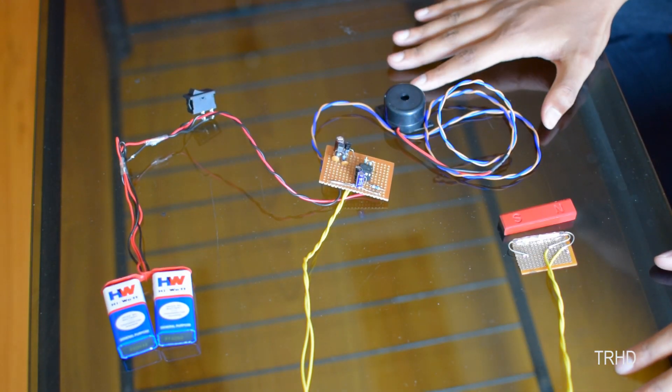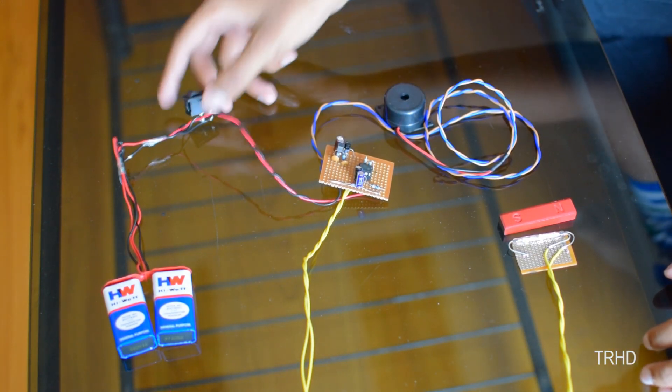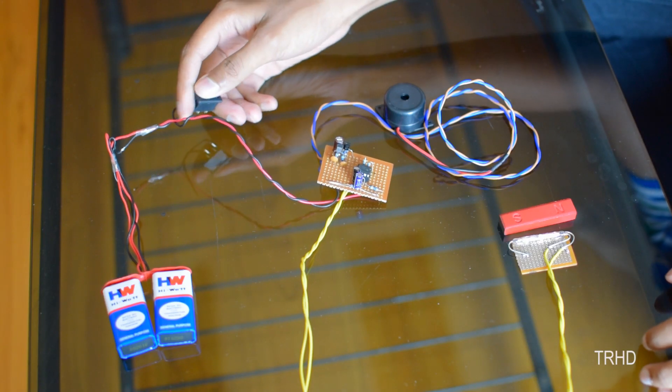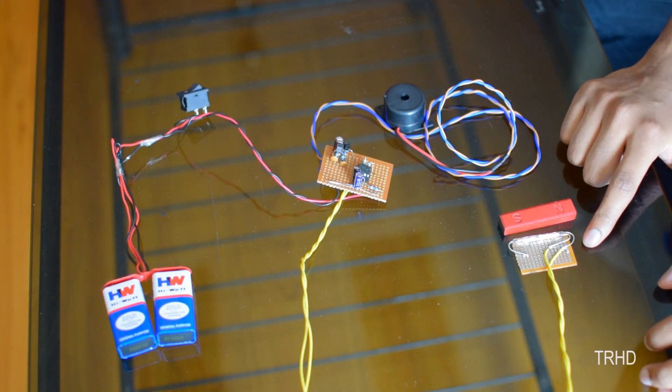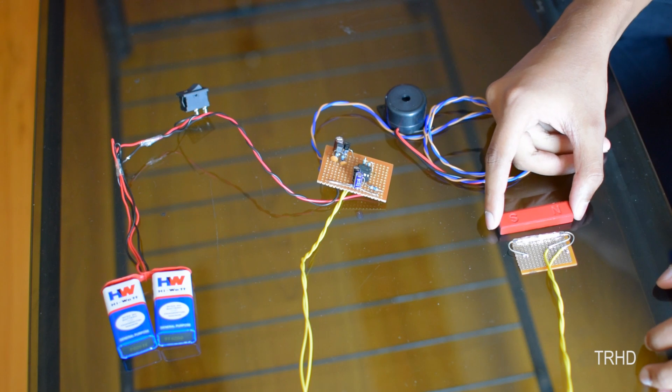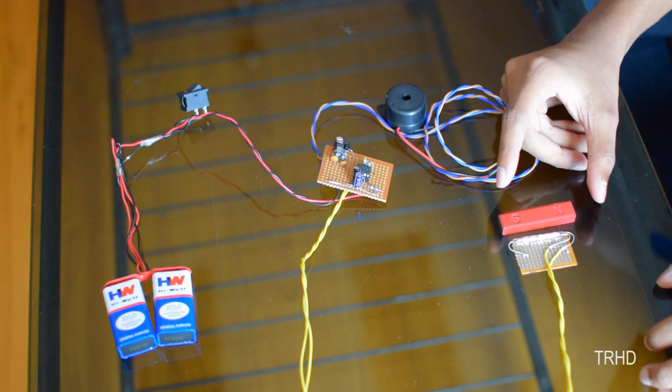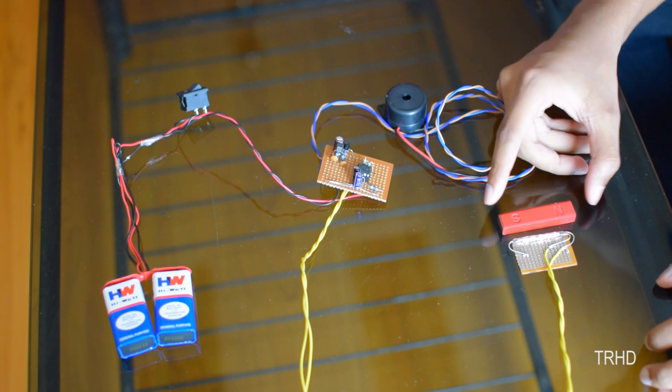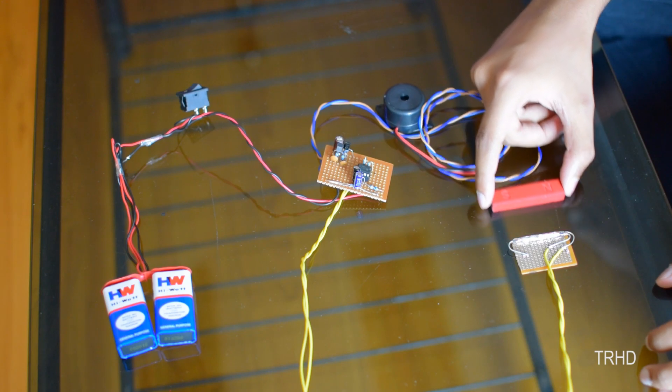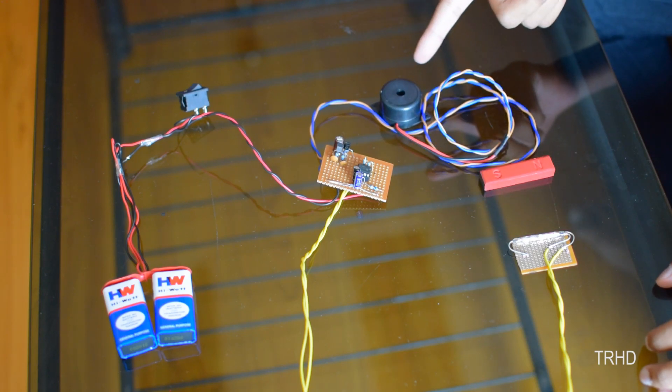Now, I will show you how this security alarm will work. First, you have to switch on the supply. Now, imagine the reed switch is fixed in the door frame and the magnet is fixed to the door. Whenever someone tries to sneak into your house, they will open the door like this. You can see the buzzer has been triggered.